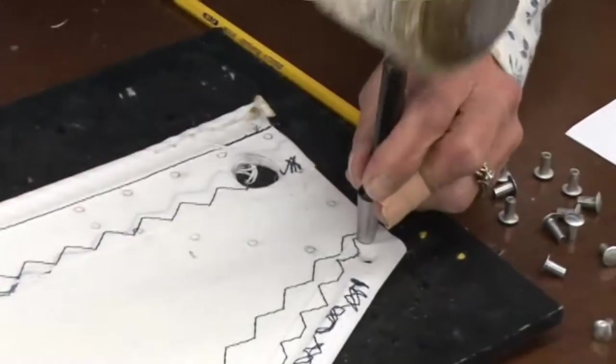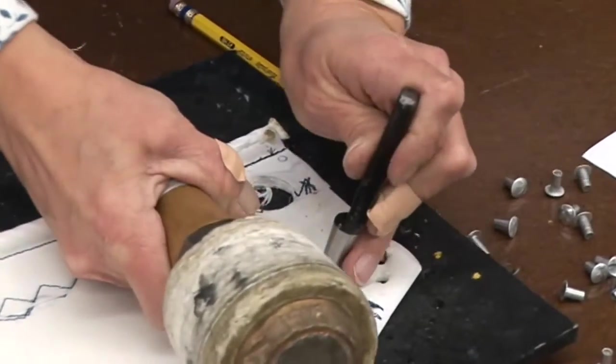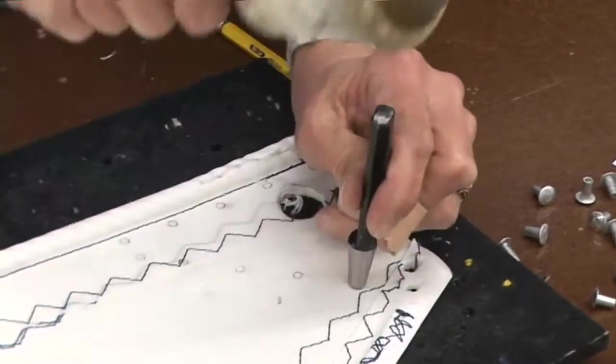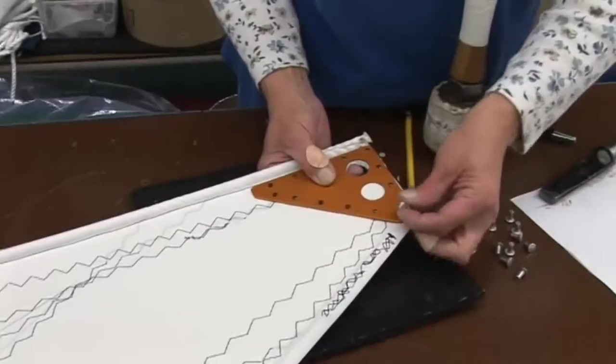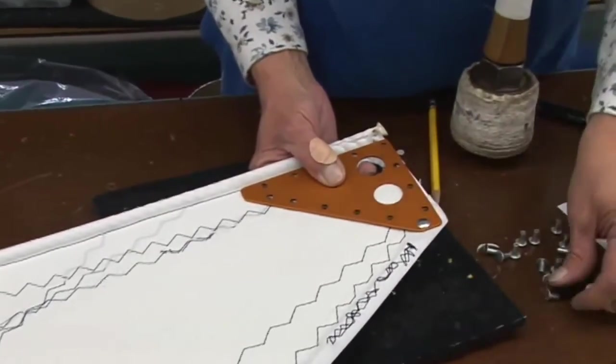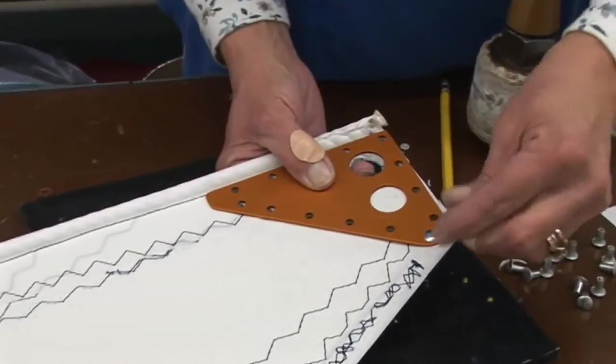To punch the holes for each of the rivets, you could use a hole cutter as Deb is doing here, or you could use a drill bit and it will work just as well. Make sure the drill bit is slightly larger than the shaft of the rivet.